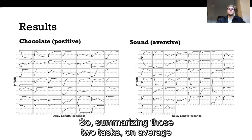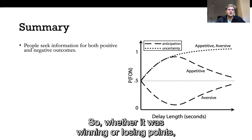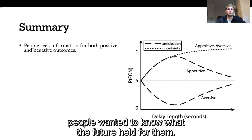So summarizing these two tasks, on average people in both tasks seek information regardless of the valence of that expected outcome. So whether it was winning or losing points, receiving a chocolate that you could eat or a high pitch screeching sound, people wanted to know what the future held for them.